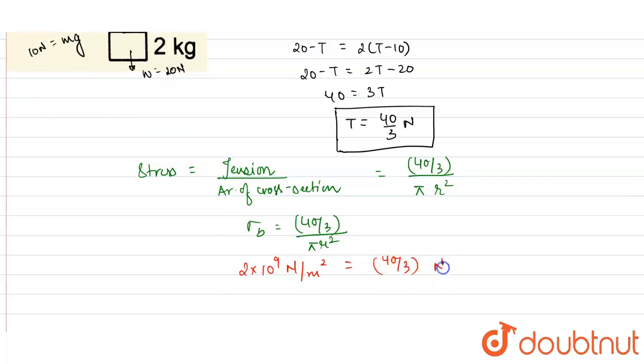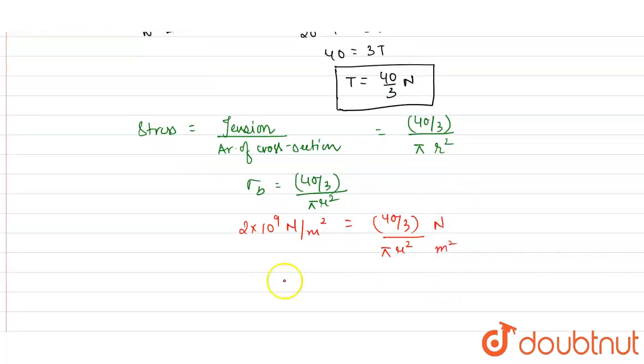From here, if we calculate the value of r, then r will come as 4.6 × 10^(-5) meters. So we have to calculate the radius of this string, and this is the required answer.